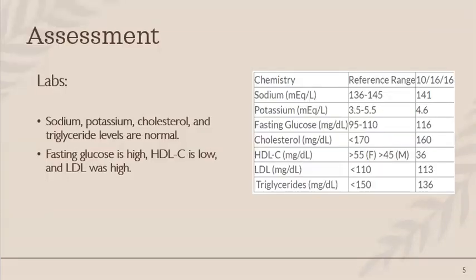Assessment: prior to being seen by the dietician, Jane's primary care physician had labs drawn, which included a CBC, a fasting glucose test, and a lipid panel. The results of all those labs can be seen in the attached image. A review shows that Jane's sodium, potassium, cholesterol, and triglyceride levels are normal. However, she does have a fasting glucose that is high and is considered to be an indicator for prediabetes in adolescents.